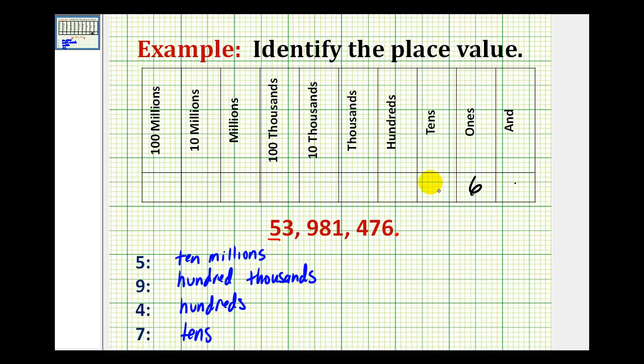So we'd have a six, seven, four, one, eight, nine, three, five. And as you can see, this would make finding the correct place value that much easier.